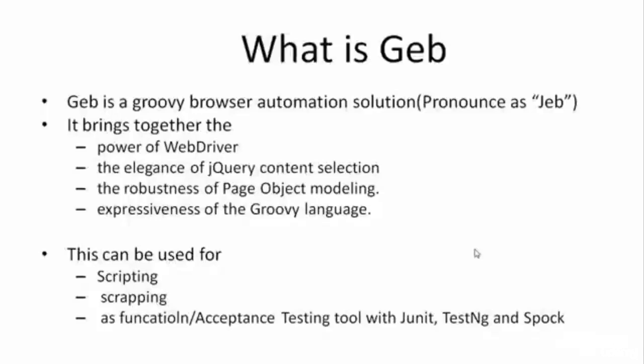Hello and welcome to this JAP tutorial. In this tutorial we are going to talk about what is JAP. JAP is a Groovy browser automation solution, which means it can handle the browser for its automation purposes.